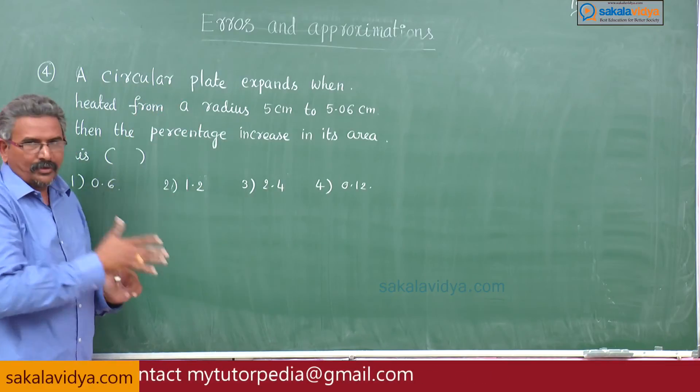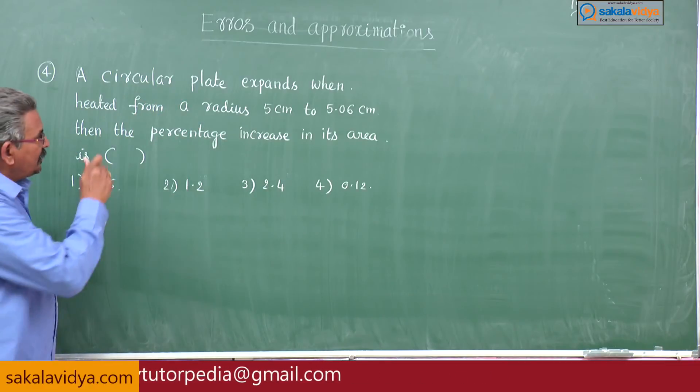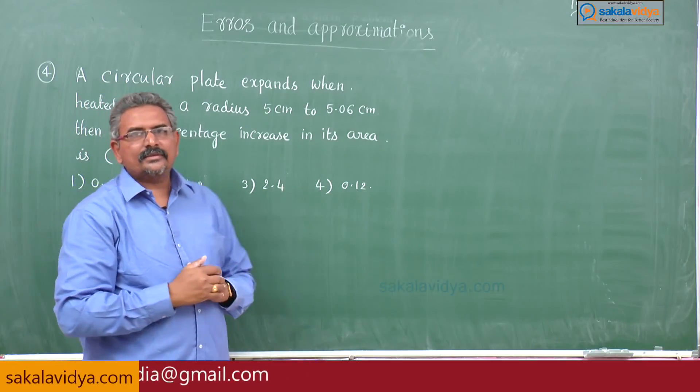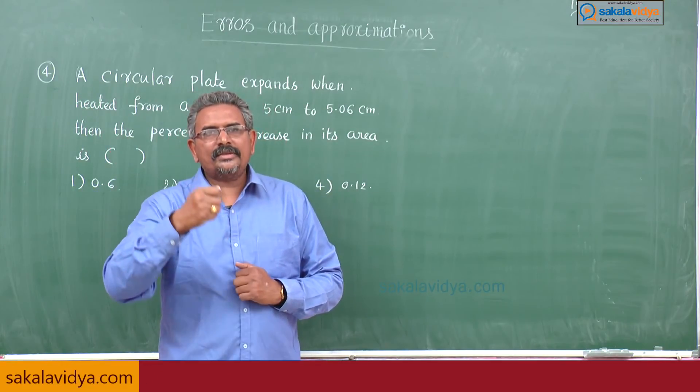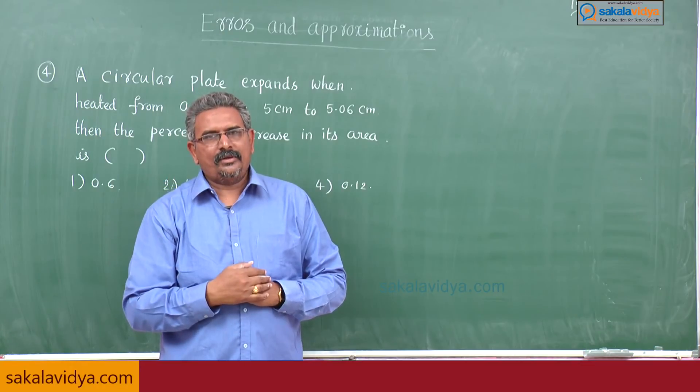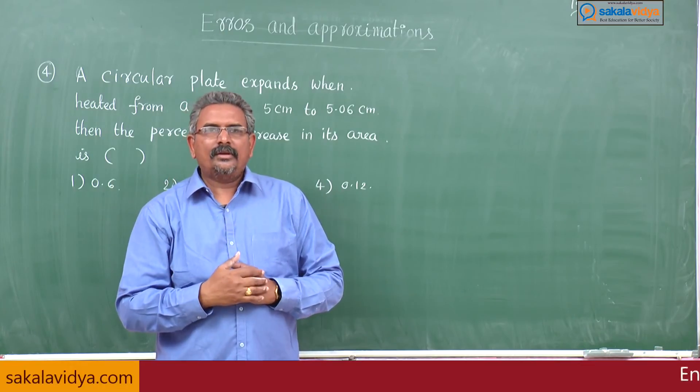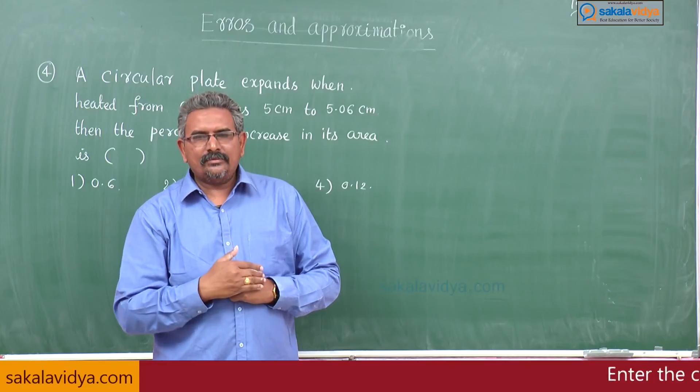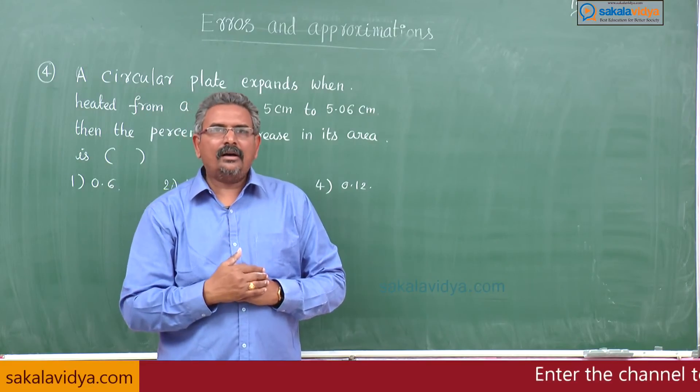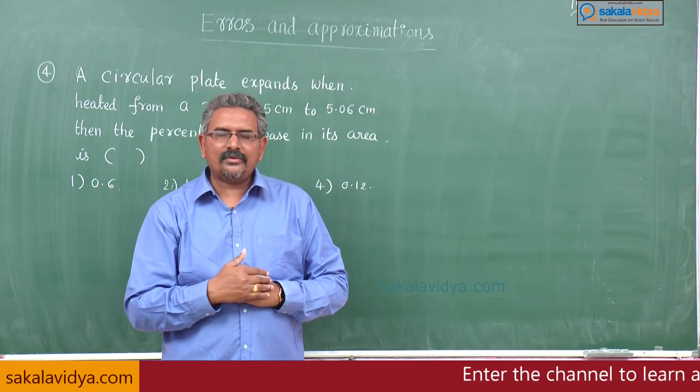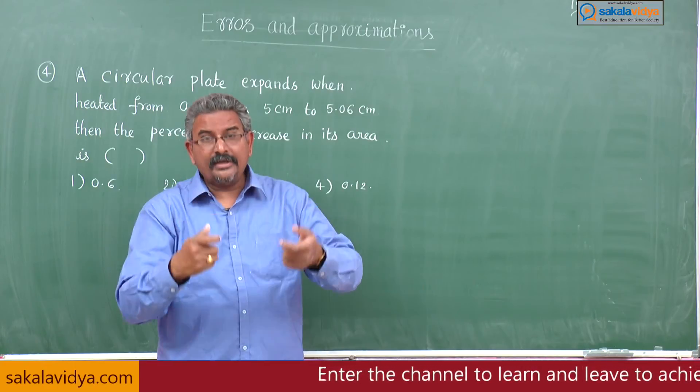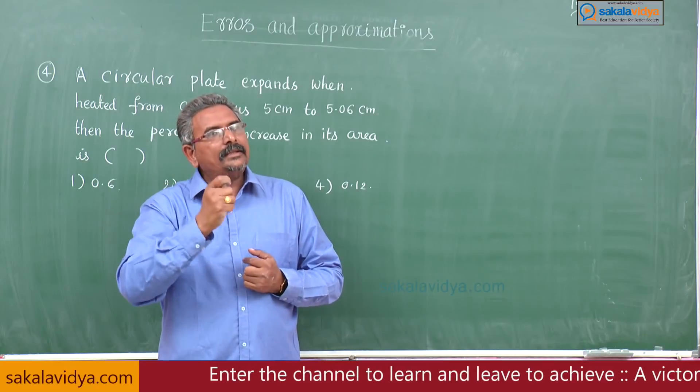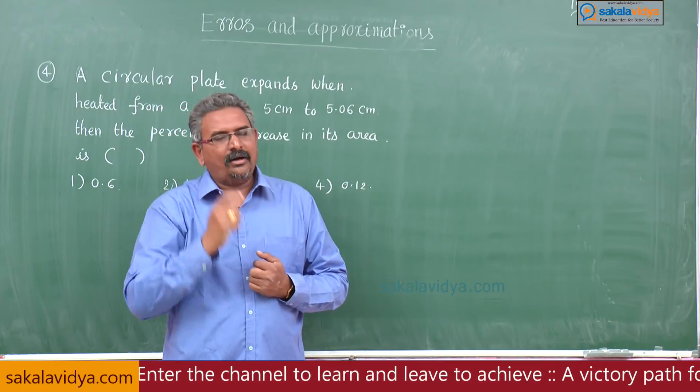First let us analyze the problem. The initial radius is 5 centimeters and final radius is 5.06 centimeters. Suppose r is equal to 5 centimeters, r dash is equal to 5.06 centimeters. What is the increase? That is 0.06 centimeters, that will be the error in the radius, say you can say delta r.